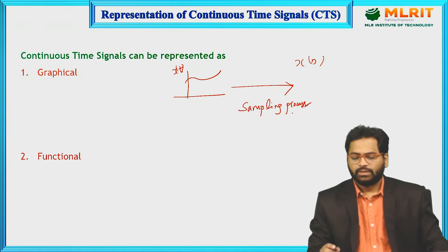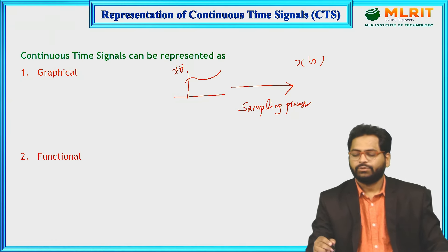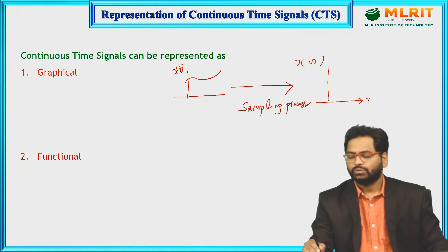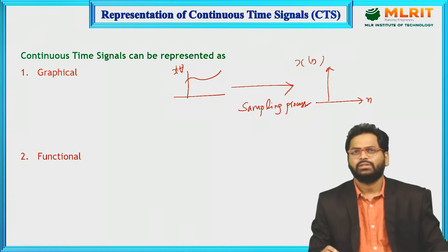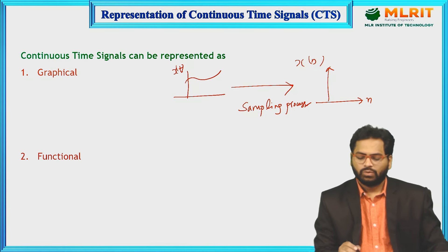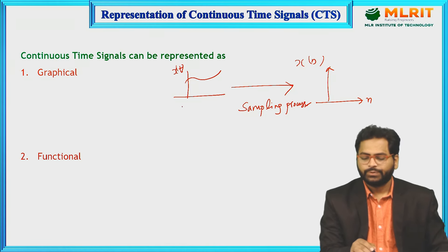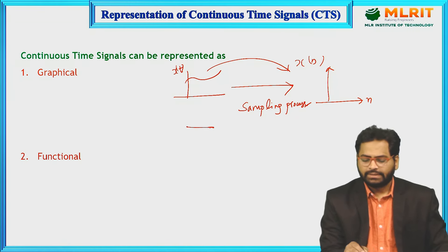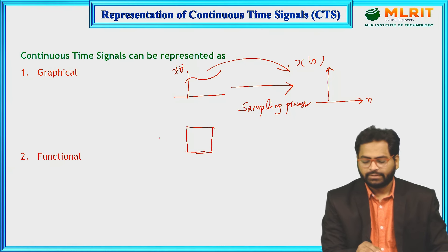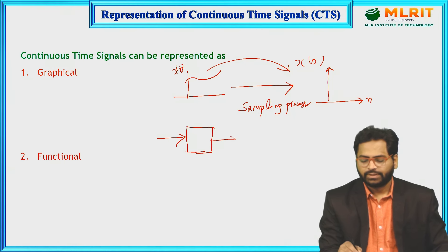x(t) is going to be converted into x(n). This process is named the sampling process, and there is a specific theory known as sampling theory. To get this continuous time signal into the discrete time signal, there is one sample-hold circuit — you can take this as a sampling circuit.